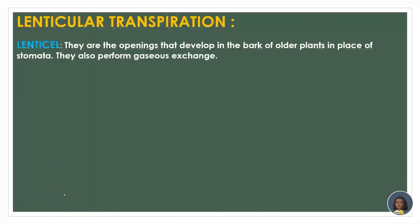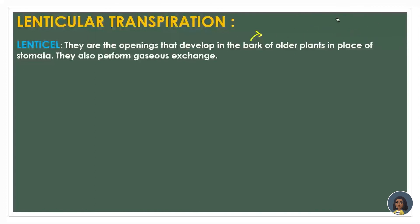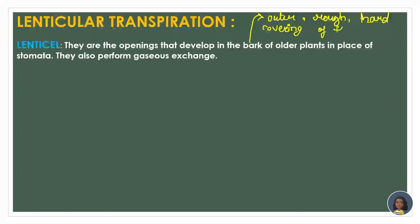Bark means the outer rough hard covering of the stem of the plant that we usually see, which is brown in color. That particular covering is called the bark of the plant. Now in the case of older plants, this bark develops a certain number of openings, which are known as lenticels.